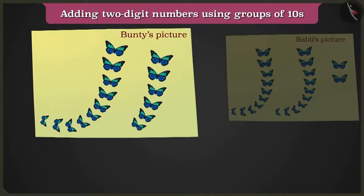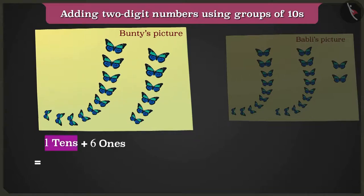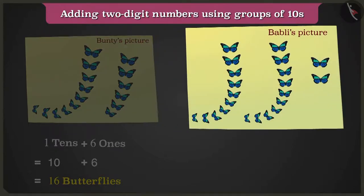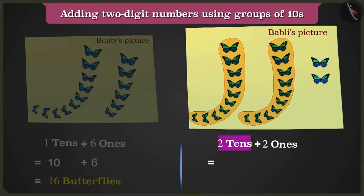Here Bunty has made one tens that are ten and six ones that are six. So ten plus six are sixteen butterflies. And Bubbly's drawing paper has two groups of tens that are twenty and two ones that are two. So twenty plus two are twenty-two butterflies.